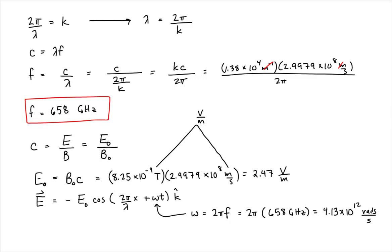So now that we have all the pieces, we could write the electric field function as being equal to minus 2.47 volts per meter cosine of 1.38 times 10 to the 4th radians per meter x plus 4.13 times 10 to the 12th radians per second t parallel to the z-axis.